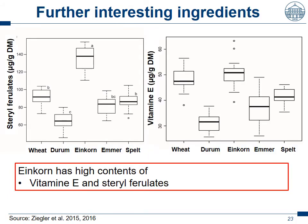Further interesting ingredients are steryl ferulates, which are anti-oxidative substances of interest in a lot of stress situations in the human body — and einkorn has a lot more than bread wheat. And vitamin E: bread wheat is already one of the most important sources, especially when you use the wheat germ and make oil of it. And einkorn has even a slightly higher amount of vitamin E.